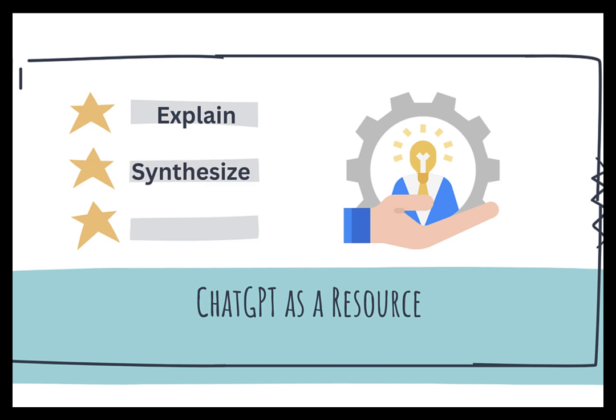ChatGPT can synthesize articles and readings by analyzing them based on provided input and prompts. It can also give students feedback on their work by analyzing the content, structure, and coherence, and comparing it against relevant criteria and guidelines. Constructive feedback can be generated, including suggestions for improvement, comments on strengths and weaknesses, and guidance on how to enhance the overall quality of the work.